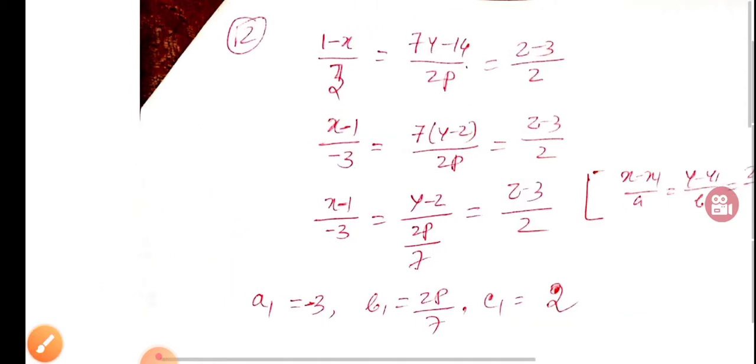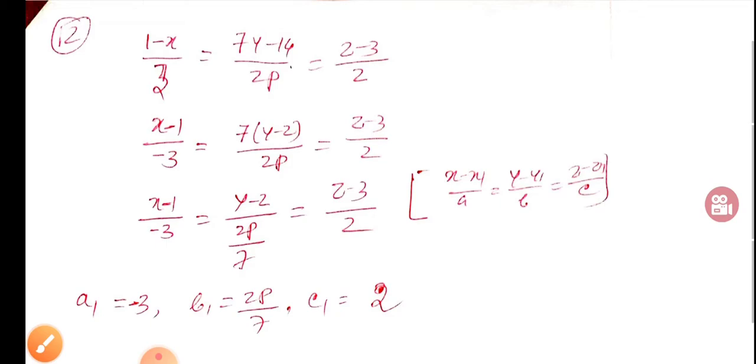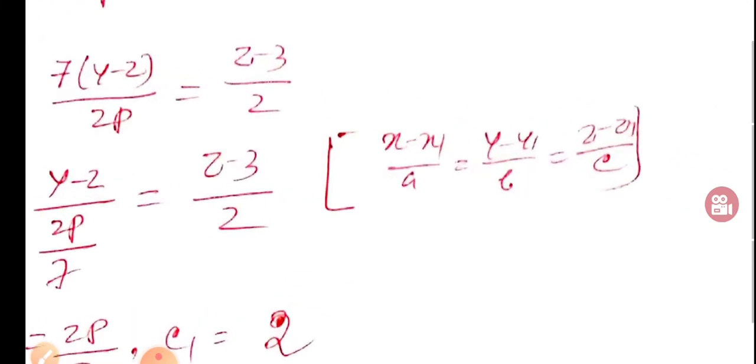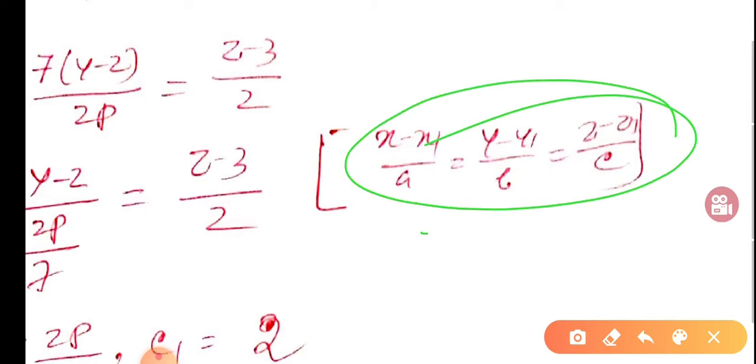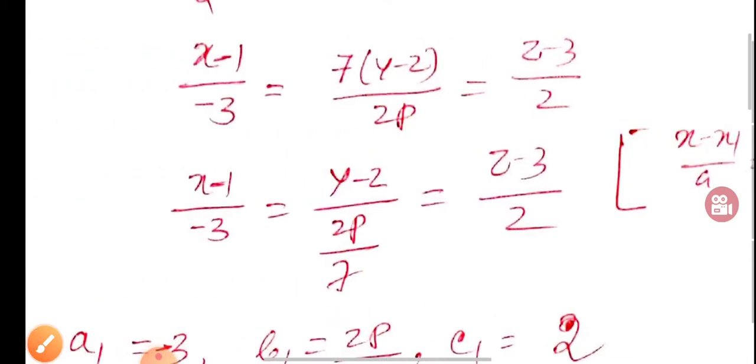Now the standard form is (x-x1)/a = (y-y1)/b = (z-z1)/c. This is the standard form with direction ratios. So first we write it in the standard form.